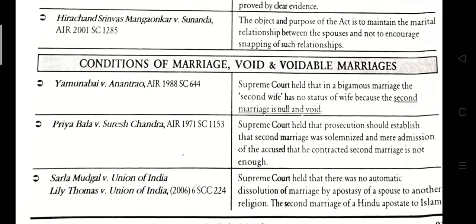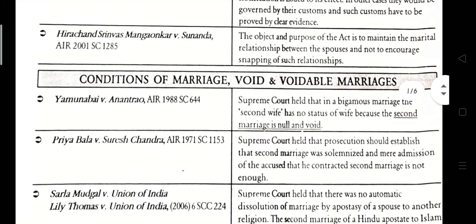Conditions of Marriage — Void and Voidable Marriage. Yamuna Bai vs. Antarao, AIR 1988. The Supreme Court held that in a bigamous marriage, the second wife has no status of a wife because the second marriage is null and void.